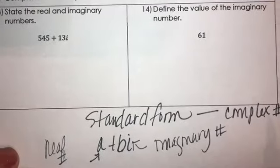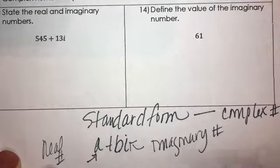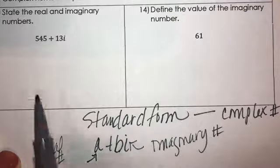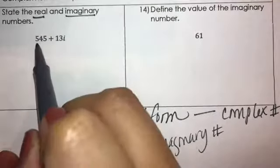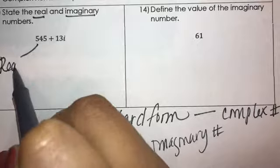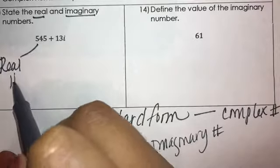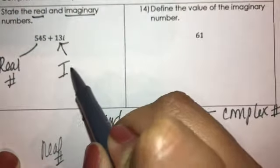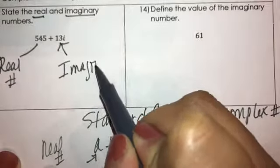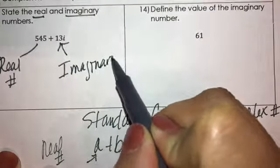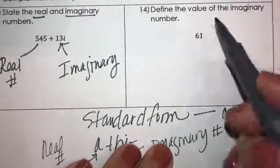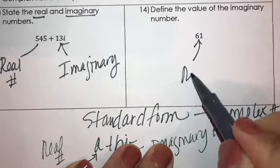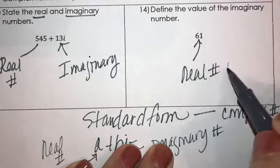So the whole thing is a complex number. State the real and the imaginary number. This is going to be the real number, and this will be the imaginary. This will be a real number only.